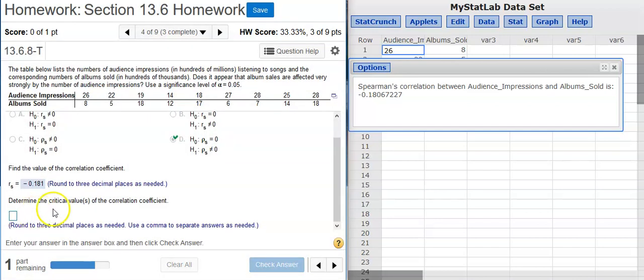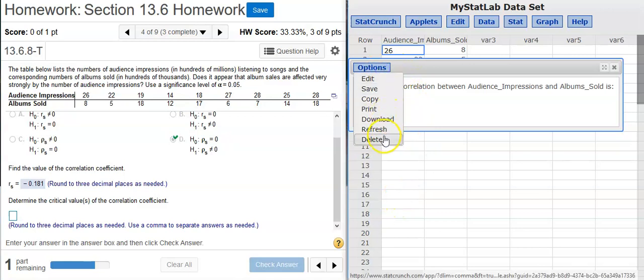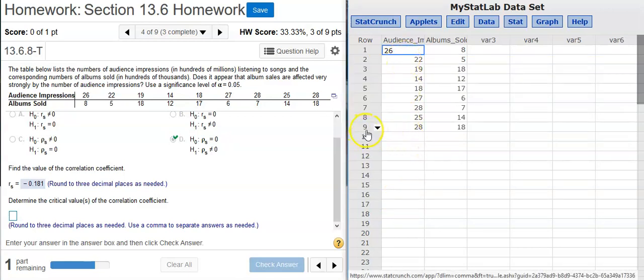Now the next part asks for critical values, and critical values are obtained from a table where we've got less than 30 for sample size, and here we definitely have less than 30 for sample size. So n is equal to 9. So we've got 9 sample pairs, and we're asked to use the significance level of 5%. So if I look on the table here for sample size of 9 and 5%, I'm going to get 0.7.